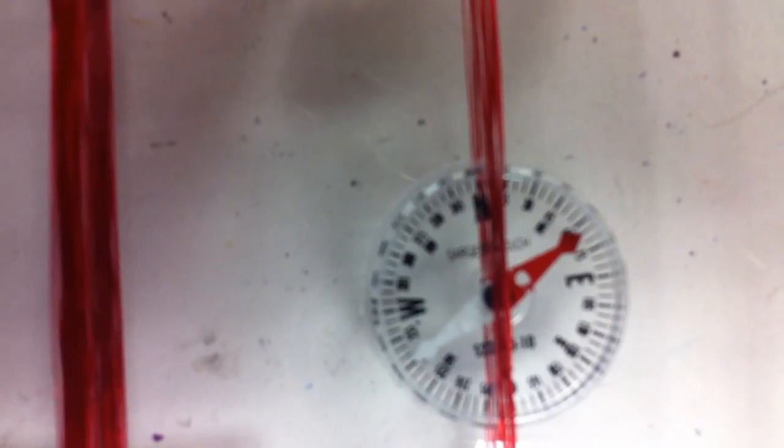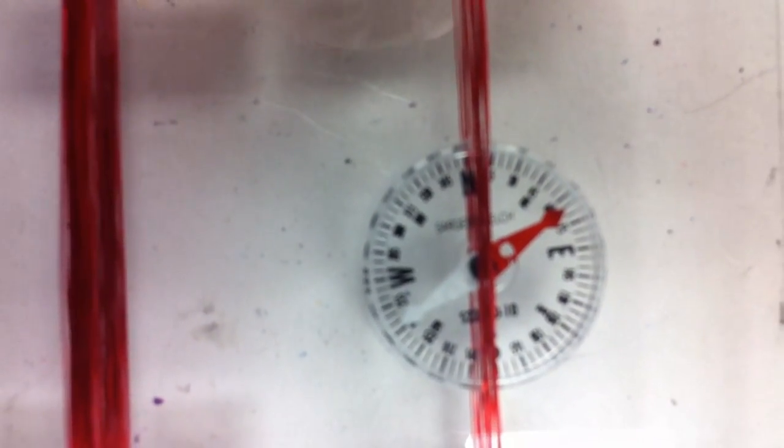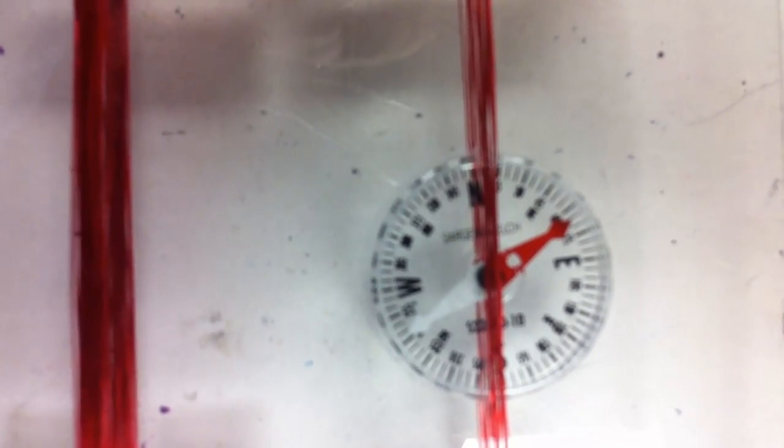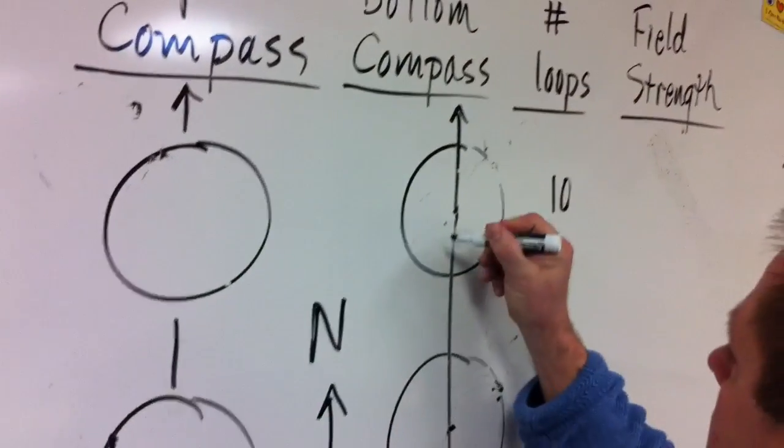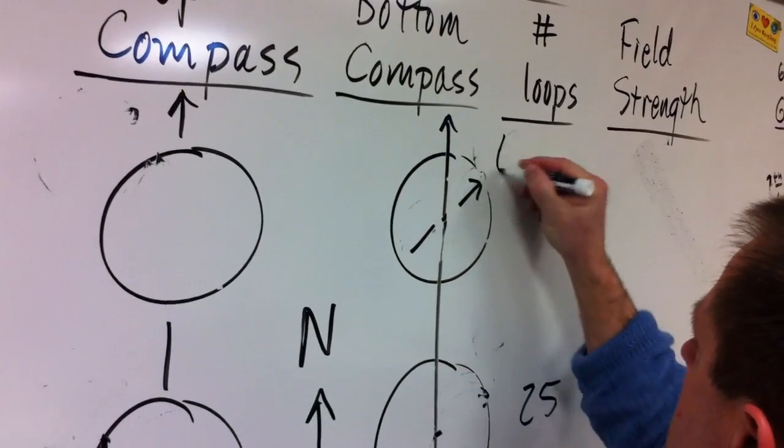And it deflects quite a bit because it's a pretty strong current. So the magnetic field is pretty strong too. And if you look close, it's about 60 degrees to the east. So we made the same thing up on the board. So it goes like that, 60 degrees.